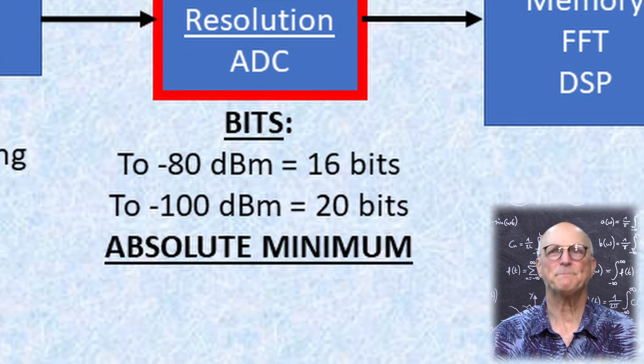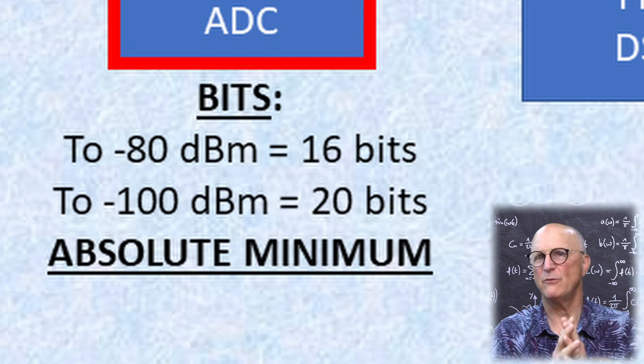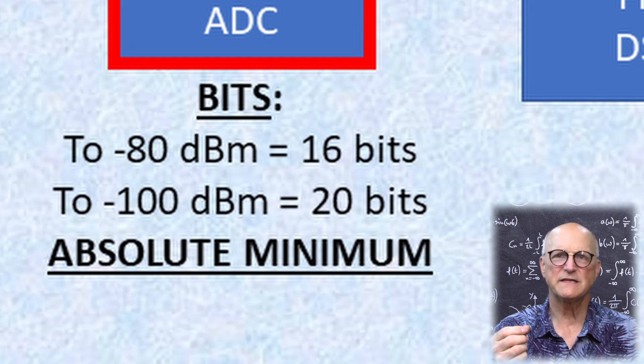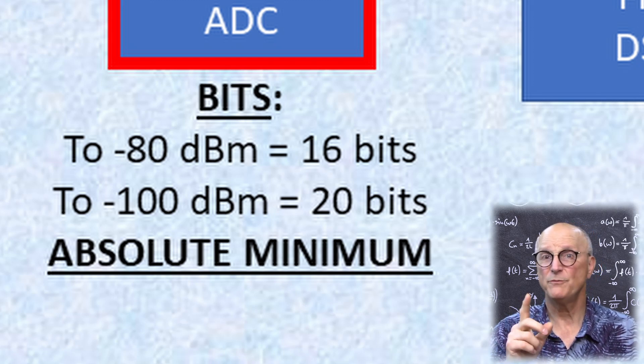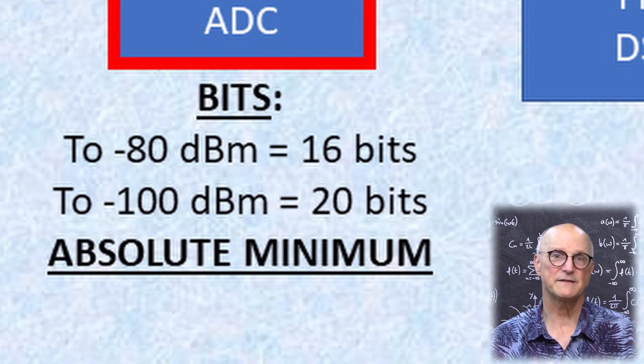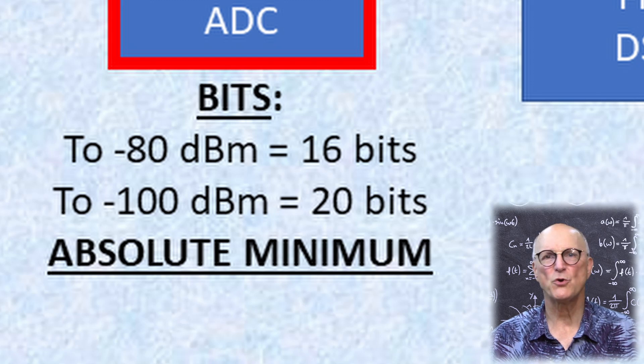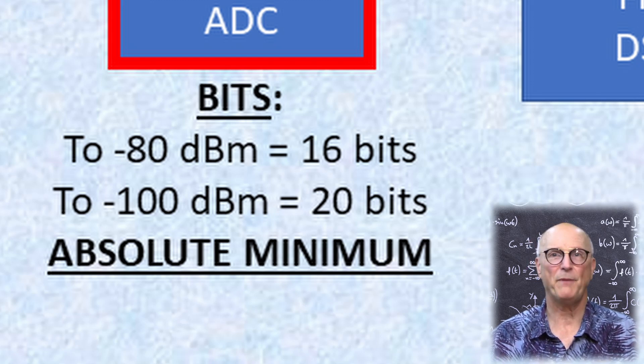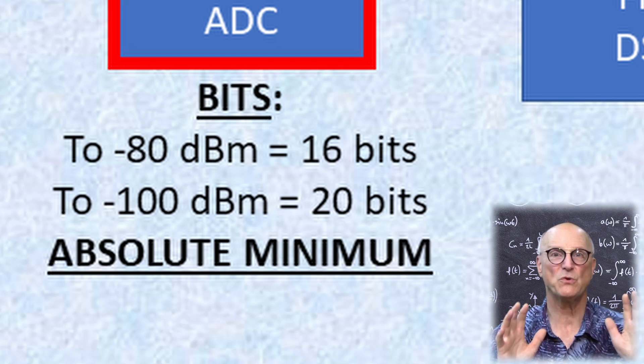The absolute minimum number of bits that we would need to achieve an analyzer which could go up to plus 10 dBm and still be able to see a signal as small as minus 80 dBm is 16 bits. If we want to see down to minus 100 dBm, we need an absolute positive minimum of 20 bits.